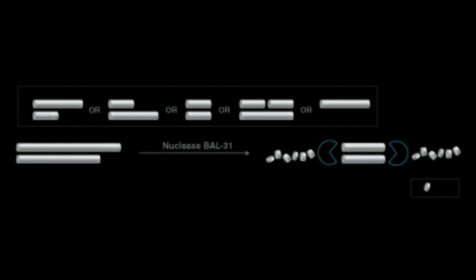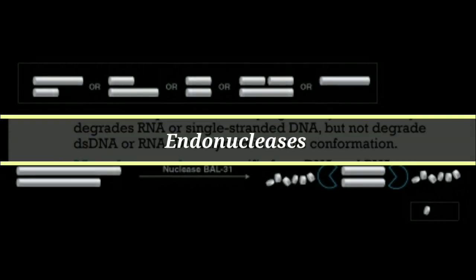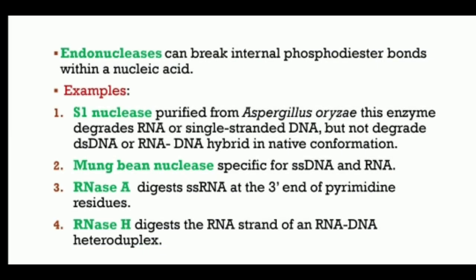Another example of an exonuclease is Bal 31, which is purified from Alteromonas espejiana; it removes nucleotides from both strands of a double-stranded molecule. Coming to another type of nuclease — endonucleases — these are enzymes that cleave the phosphodiester bond within a polynucleotide chain. An example is S1 nuclease, purified from Aspergillus; this enzyme degrades RNA or single-stranded DNA but not double-stranded DNA or an RNA-DNA hybrid in native conformation.